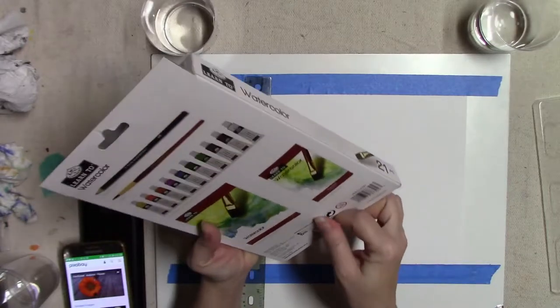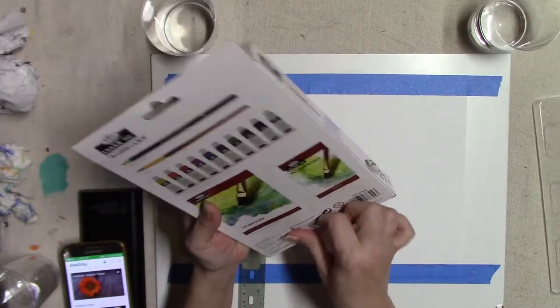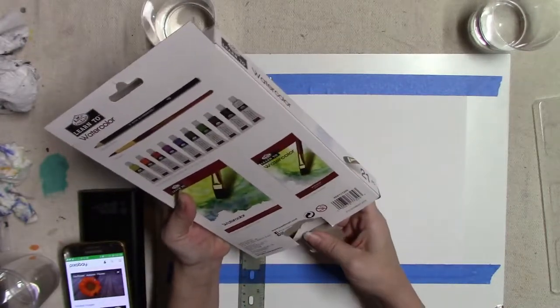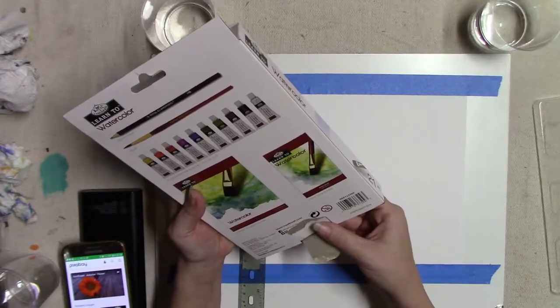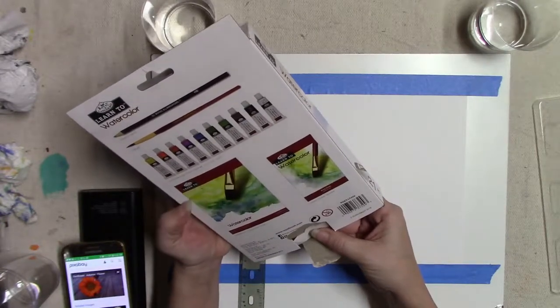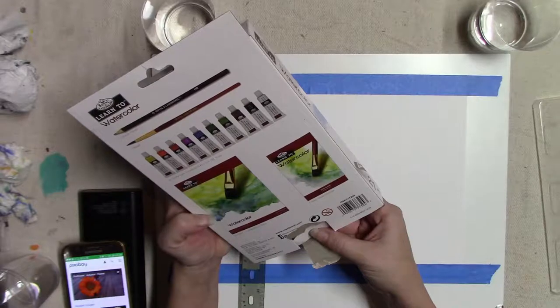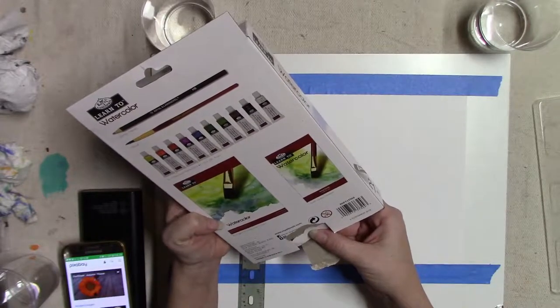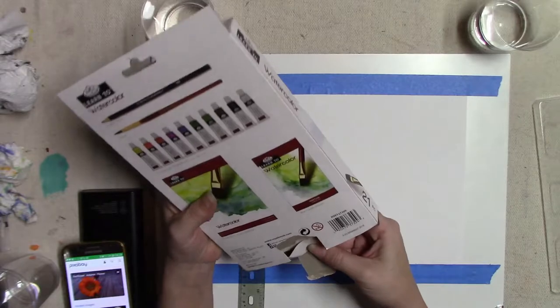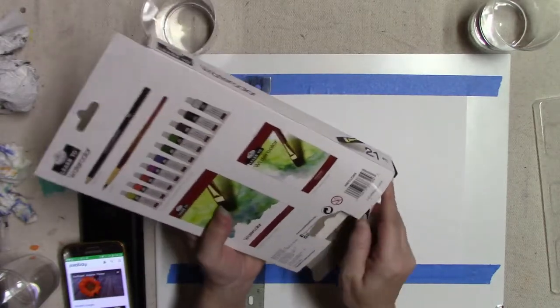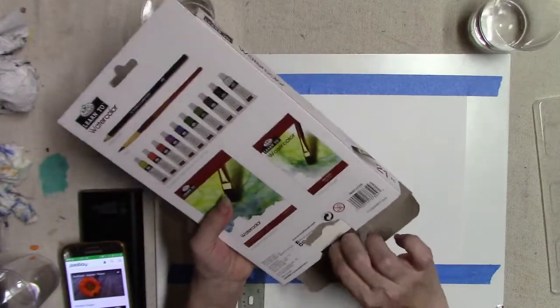It came with one HB pencil for sketching, a small round brush, ten paints, eight sheets of watercolor paper, and one guide.